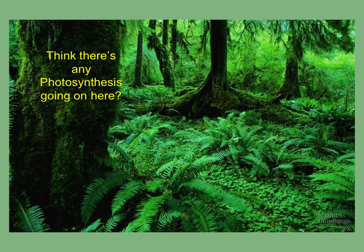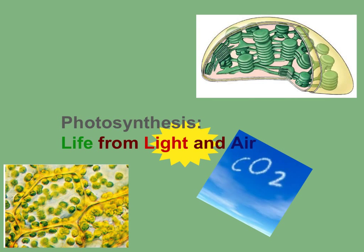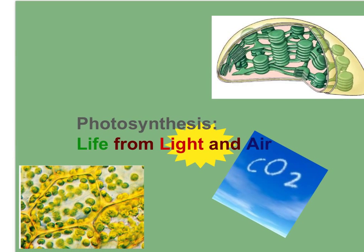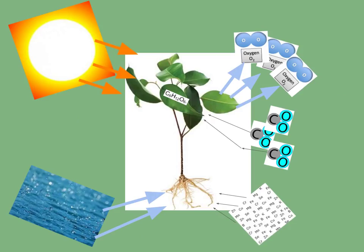Hi there. In this screencast, we're going to begin talking about the process of photosynthesis. Just getting done talking about another major pathway in living things — cell respiration — photosynthesis is really kind of the biochemical opposite, where we're going to make organic compounds from light and from compounds in the air. These are the basic raw materials of photosynthesis. The whole process is an endergonic process where the input is sunlight.